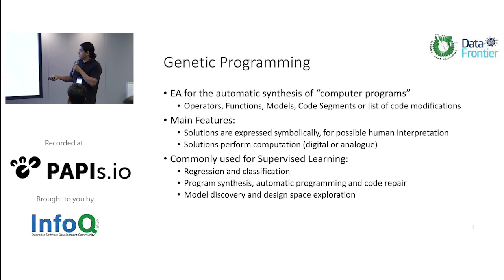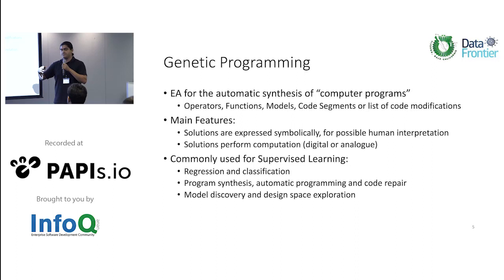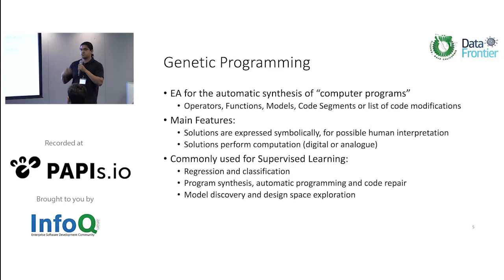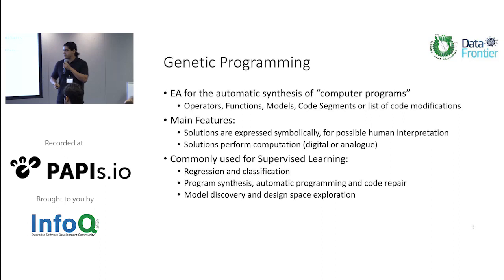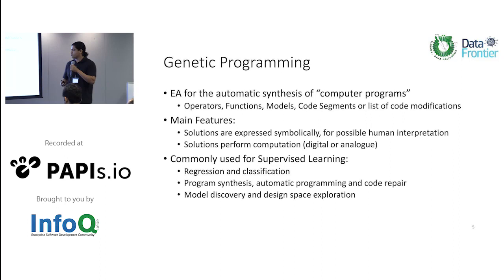The class of evolutionary algorithm I'm going to talk about is genetic programming. Genetic programming is basically an evolutionary algorithm to evolve programs — computer programs. Not full software systems, but you can evolve operators, functions, models, and code segments. A main feature is that you express your solutions symbolically, which is a key difference from, for example, a neural net. Solutions perform some form of computation, and GP is commonly used for supervised learning problems such as regression, classification, program synthesis, automatic programming, and program repair. You can also do model discovery and design space exploration in problems where you're not sure how to start.